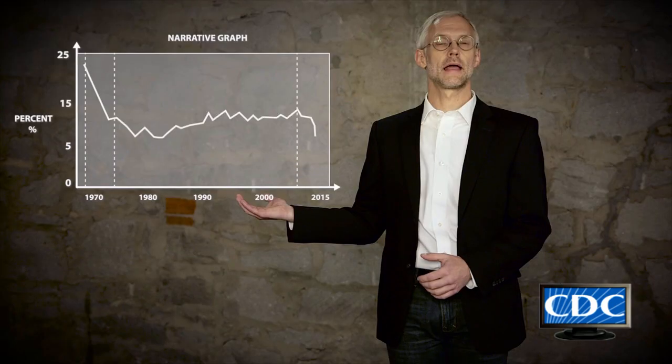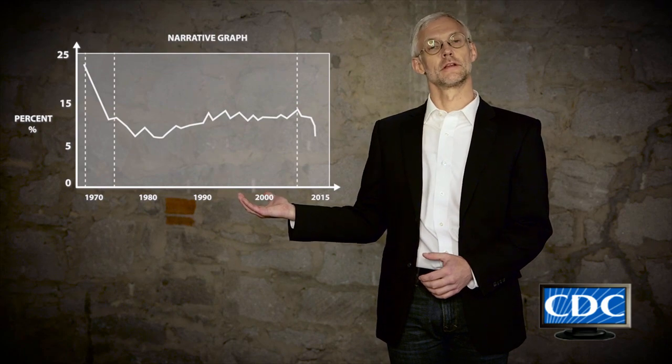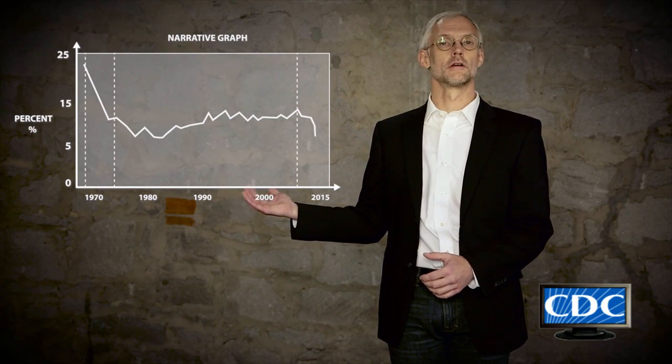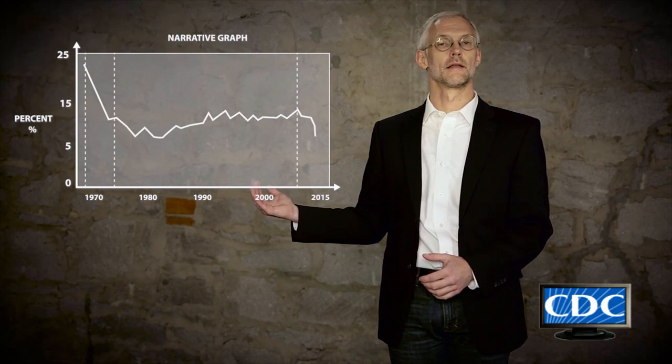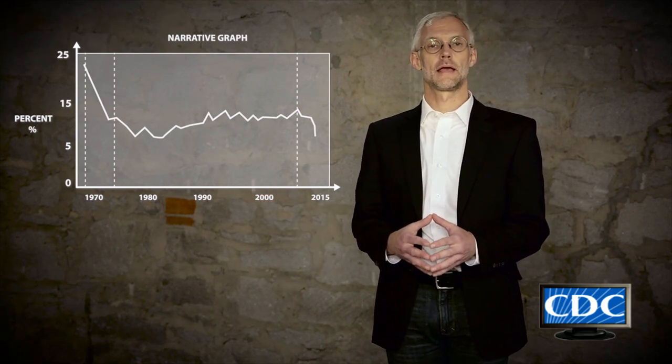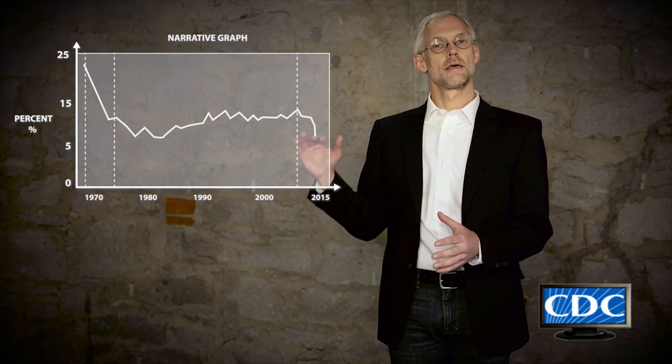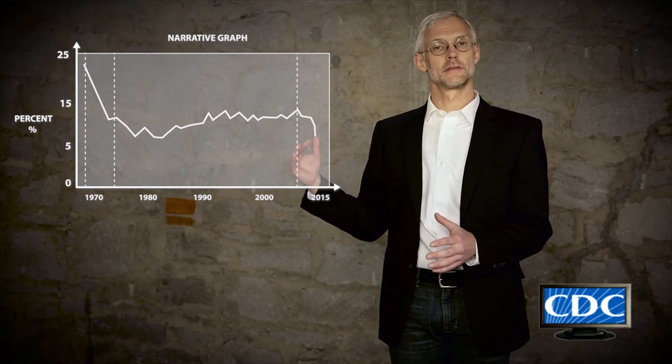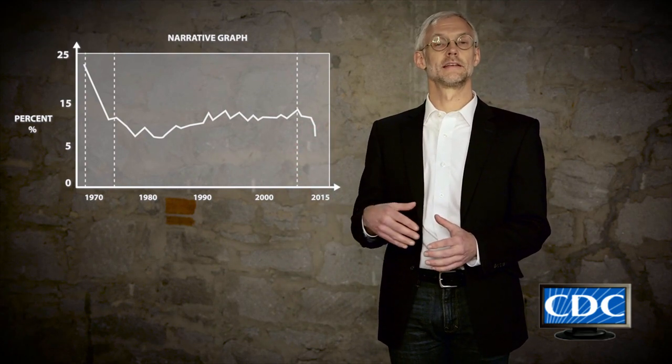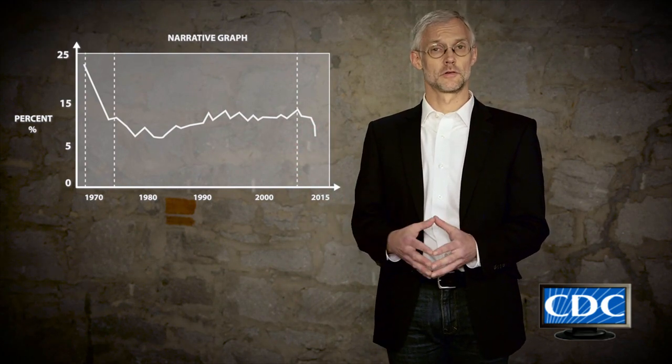Another type of graph is what I refer to as a narrative graph. This is a graph that may look at a trend line over time, where you can look at different events or interventions that occurred along that trend line. This gives you an ability to anchor different experiences along that trend line and to tell a dynamic story.